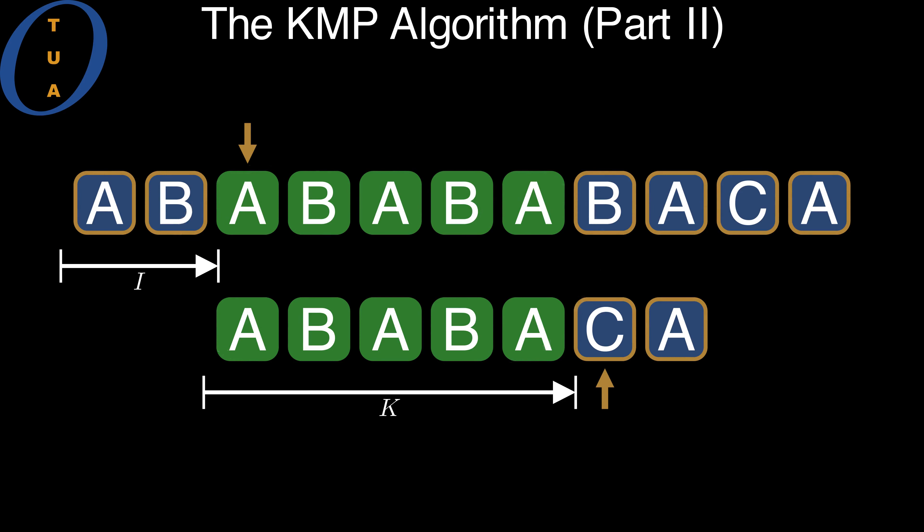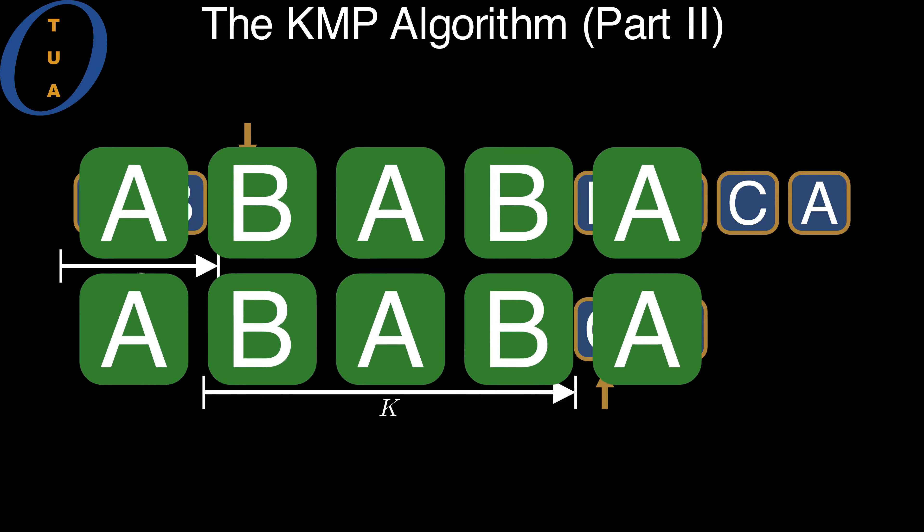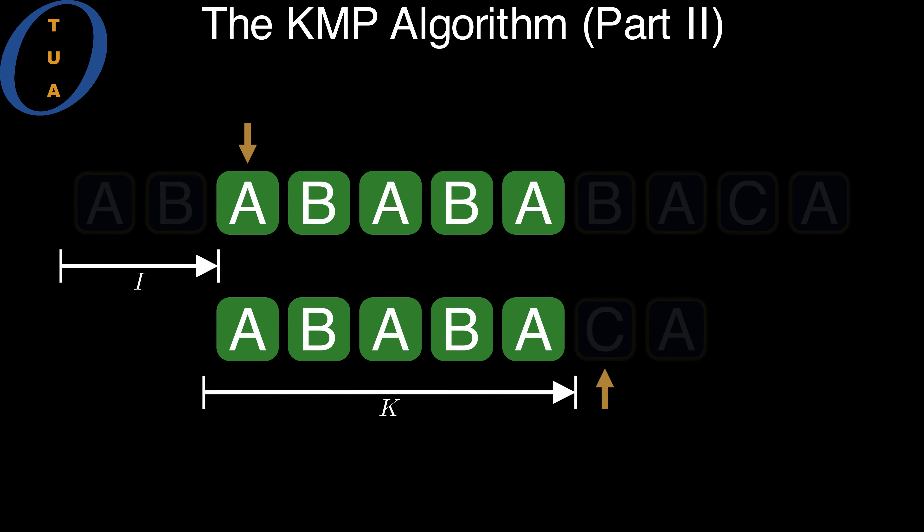There are two instances of the overlap, one in the pattern and one in the text. Let us concentrate on the two instances of the overlap and ignore all other symbols.